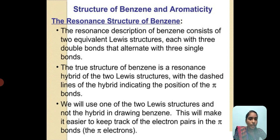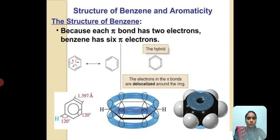This makes it easier to keep track of the electrons in the pi bonds. Benzene has six pi electrons in three pi bonds, shown as alternating double bonds. In the hybrid structure, the electrons in the pi bonds are delocalized around the ring, which we represent using dashed lines.